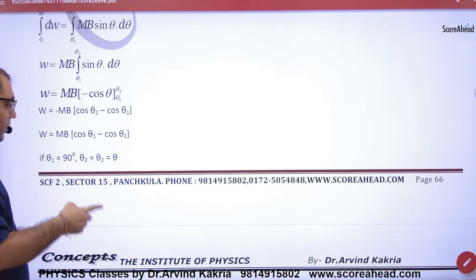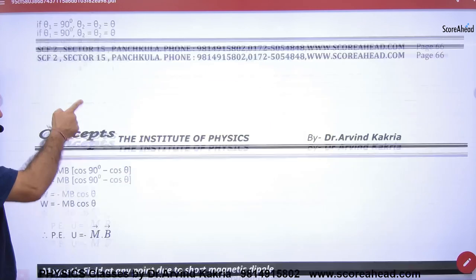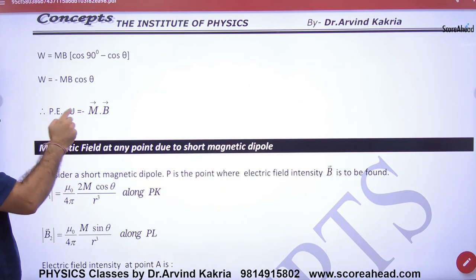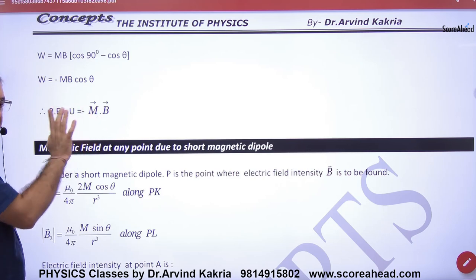And it was also a special case. If one angle is 90°, one angle is θ, what is the potential energy formula? Minus mb cosθ. And in the vector form, minus m vector dot B vector.